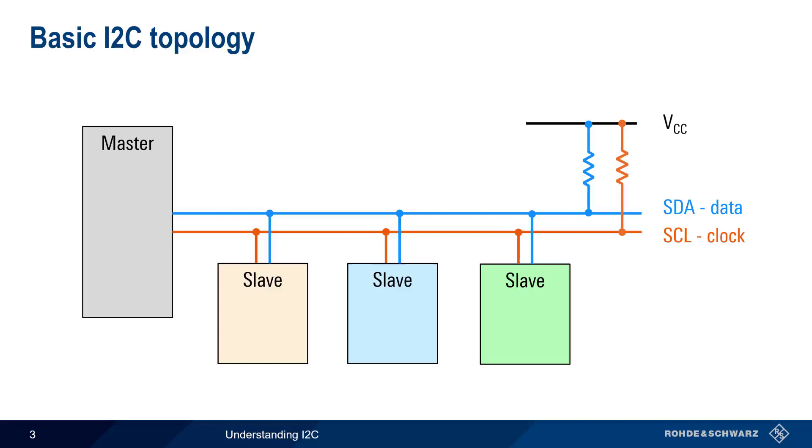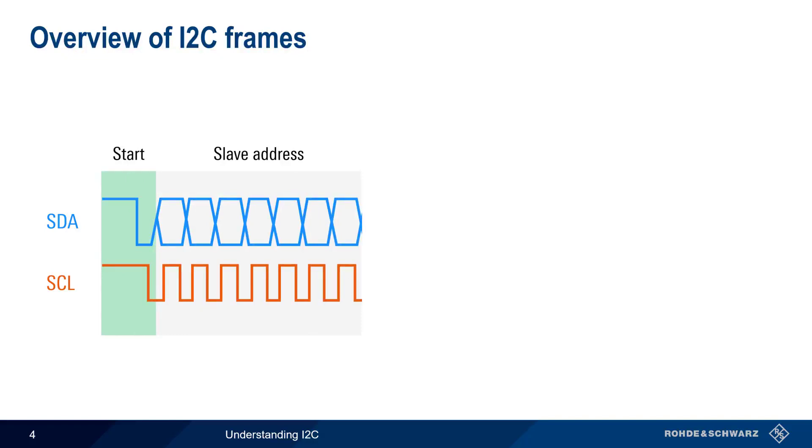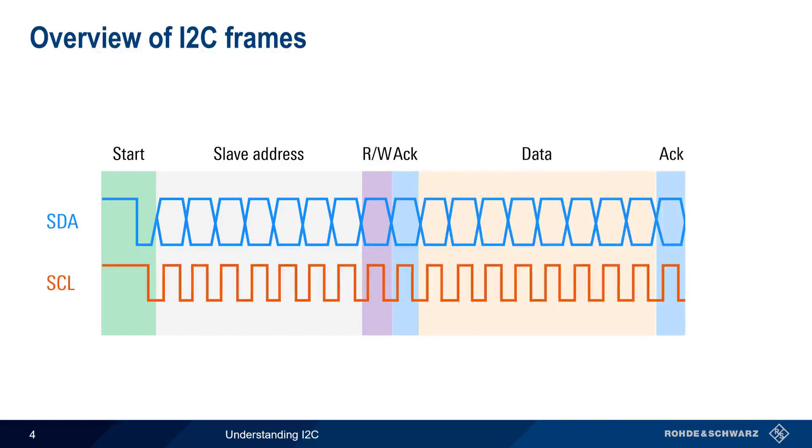I2C nodes exchange data over this shared bus in the form of frames. Let's take a high-level look at I2C frames. An I2C master claims the bus by means of a so-called start condition. It then sends the address of the slave that it wishes to communicate with, as well as an indication as to whether it wishes to read data from or write data to the slave. The slave acknowledges its presence and its readiness, after which the data is transmitted and acknowledged. The communication is terminated by means of a stop condition. Let's now go back through this frame and explain each of these fields in more detail.